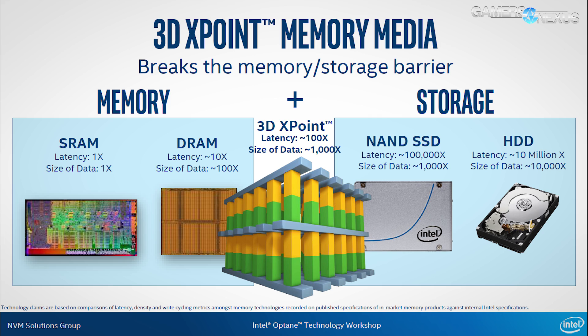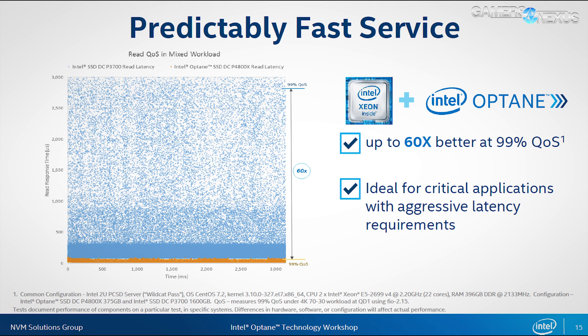Optane is a combination of 3D XPoint memory media, Intel memory and storage controllers, Intel interconnect IP, and Intel software. The 3D XPoint storage media is a solid-state architecture. The memory and storage controllers work similarly to flash and SSD controllers with notable exceptions. The interconnect IP and software appear to combine in-house code with licensed software from Scale MP, which specializes in virtualization and symmetric multi-processing. Storage is architected at the byte level, giving Intel flexibility to make DIMMs or storage devices.